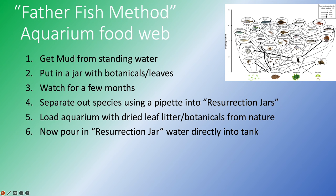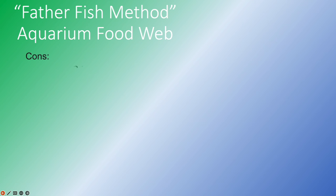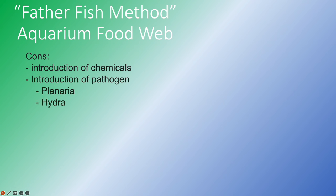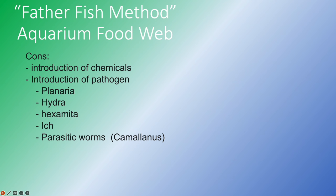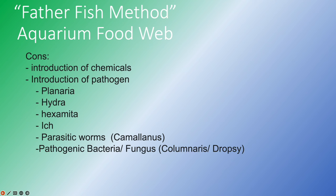That is probably one way to get an aquarium food web. However, you're putting your aquarium at quite a risk. You could be introducing tons of chemicals, different pathogens, planaria, hydra — those are pathogenic organisms definitely out in nature. There's hexamita, ich, parasitic worms, maybe camallanus. If you've ever had guppies with worms, camallanus will destroy them. There's tons of pathogenic bacteria, and there's fungus, which can cause columnaris or dropsy or just kill your fish outright. Sometimes these aquarium-bred fish aren't as strong as their wild-type relatives, so these could all be pretty devastating to an aquarium.